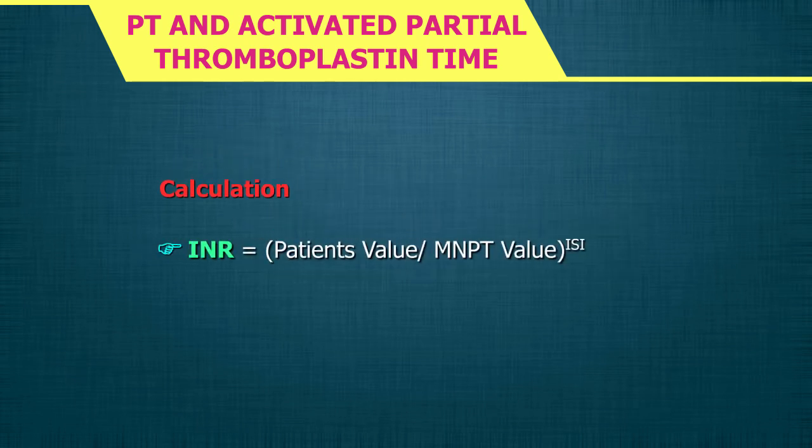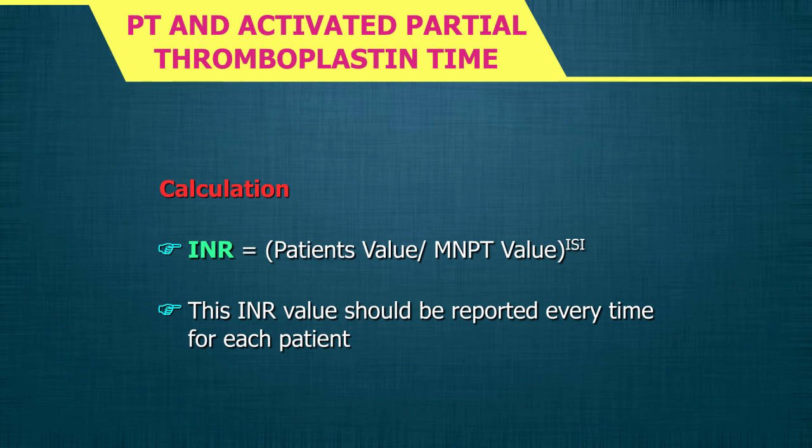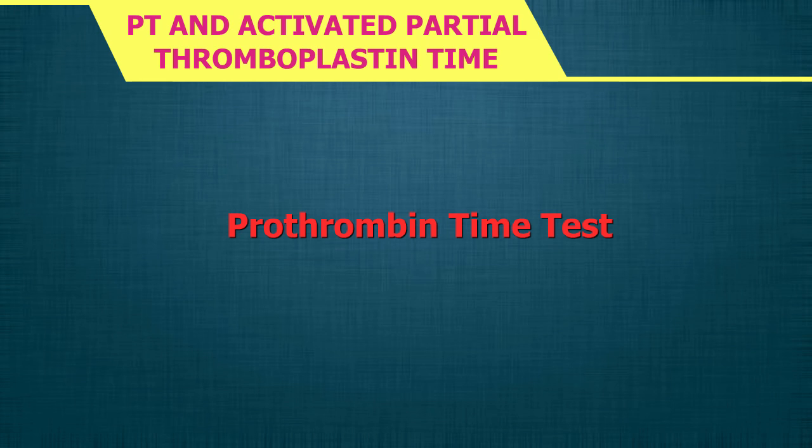Once the MNPT is known, INR can be calculated using the formula: INR = (patient's PT value / MNPT value) raised to the power of the ISI value. This INR value should be reported every time for each patient.